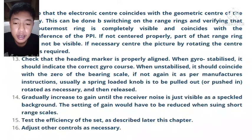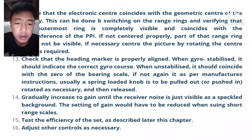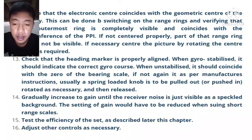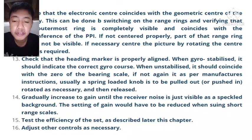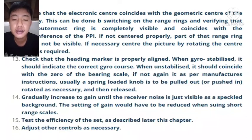Number thirteen, check that the heading marker is properly aligned. When gyro-stabilized, it should indicate the correct gyro course. When unstabilized, it should coincide with the zero of the bearing scale. If not, adjust as per manufacturer's instructions — usually a spring-loaded knob is to be pulled out or pushed in, rotated as necessary, and then released. Number fourteen, gradually increase the gain until the receiver noise is visible as a speckled background. The gain settings will have to be reduced when using short range scales. Number fifteen, check the efficiency of the set. Number sixteen, adjust other controls as necessary.